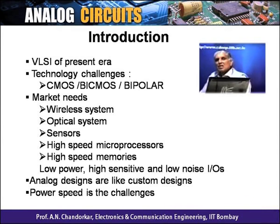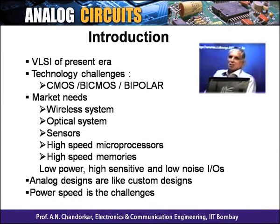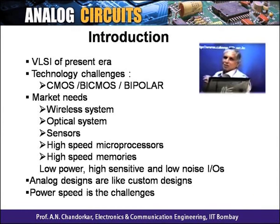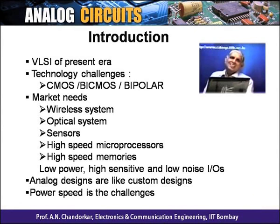Another area where analog circuits are very strong is sensors — you cannot survive without them. On the digital side, even for video game markets like Sony PlayStation or Microsoft, there is huge research into microprocessor speeds. A desktop running 1 GHz with 256 MB DRAM is not enough for modern video games, so researchers are now targeting around 6 GHz processes, with an ultimate aim of reaching 16 GHz in the Ku-band.